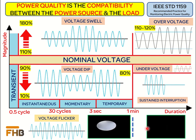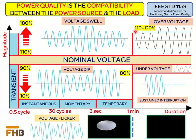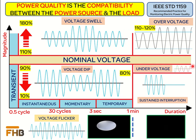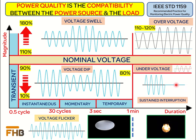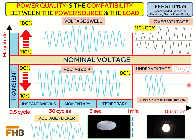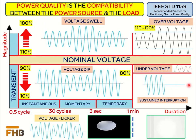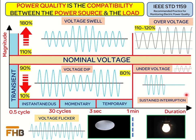Now we will discuss about the long duration variations. Overvoltage is a long duration variation which lasts more than 1 minute and has a magnitude of 110 to 120% of the nominal voltage. Undervoltage is a long duration variation which lasts more than 1 minute and has a magnitude of 80 to 90% of the nominal voltage. An interruption is a complete loss of voltage, or the magnitude of the supply voltage drops below 10% of the nominal voltage. If the interruption is less than 1 minute, then it is considered as a momentary or temporary interruption. However, if the interruption lasts more than 1 minute, then it will be considered as a sustained interruption.